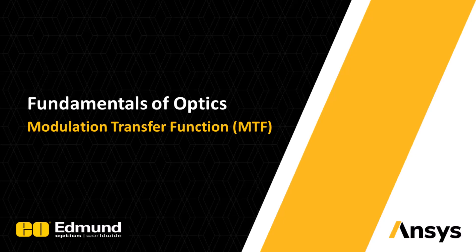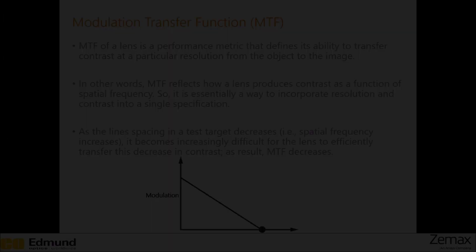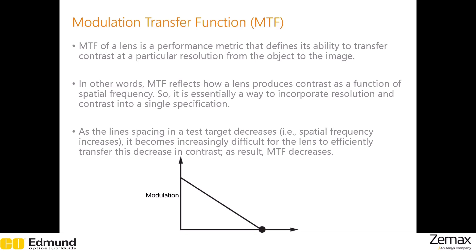In this section, you will learn about Modulation Transfer Function, or MTF. MTF is a very important lens performance metric which describes how well contrast can be transferred from object to image. It is given as a function of spatial frequency. So when the line spacing in a test target becomes smaller and smaller, it gets really challenging to resolve them, which means that the lens's ability to transfer contrast is reduced and so the MTF goes down as well.